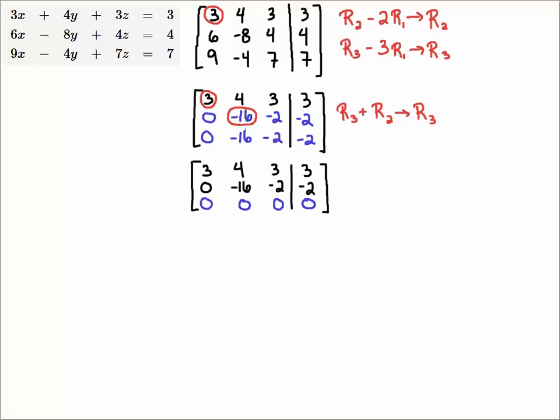So notice that if we just add these two rows together we see that both these rows have the same entry so we just get zeros in all the bottom row.